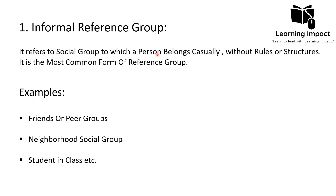The informal reference group is a group to which individuals belong casually, without rules or structure. It is the most common form and is relationship-oriented — no fixed social structure, rules, regulations, or official documentation required. Examples include peer groups, neighborhood social groups, and classmates. Individuals compare themselves to these groups casually in daily life.